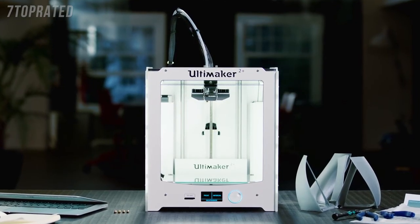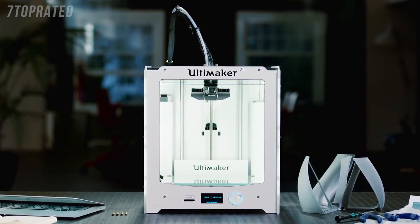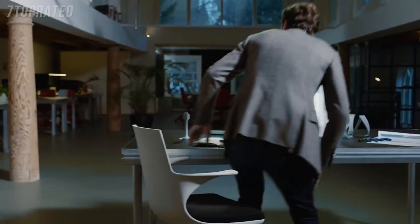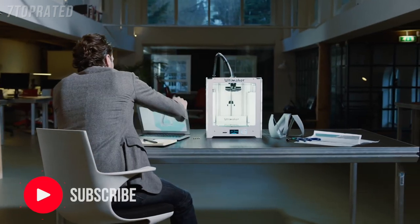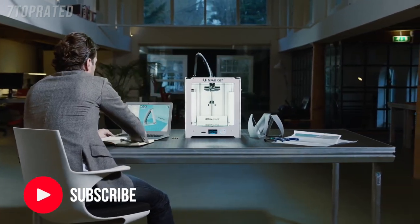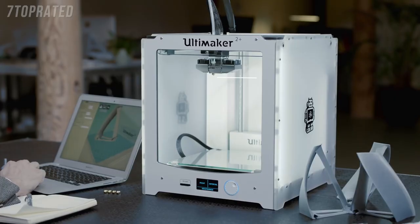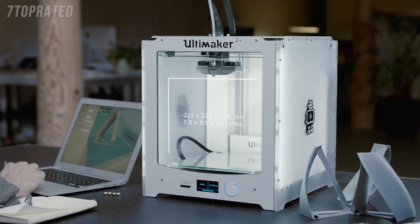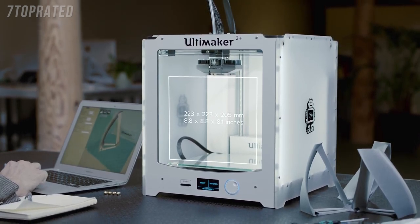This is the Ultimaker 2+, a unique 3D printer with an innovative, open-source platform and a global community. Let's take a look at what makes it one of the best desktop 3D printers ever. The Ultimaker 2+ has a large build volume, and yet it can easily fit onto any desk.